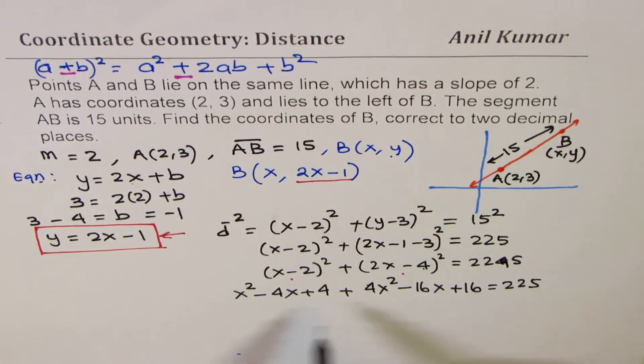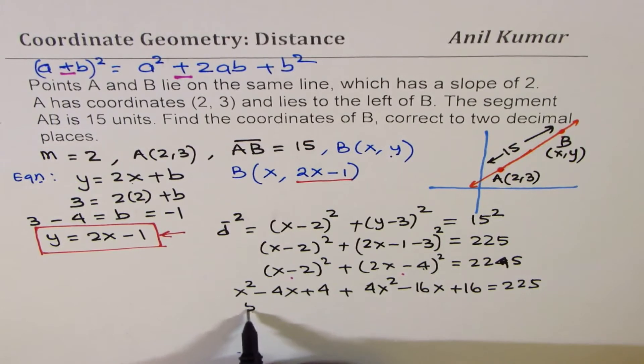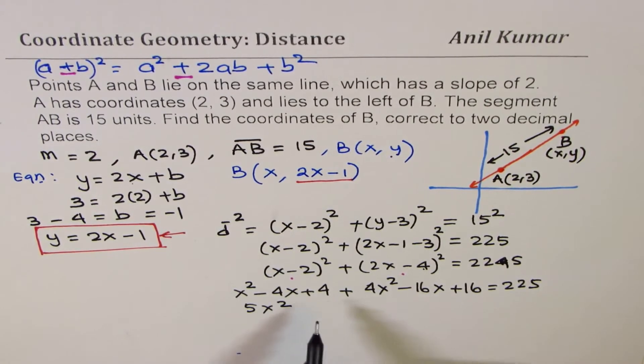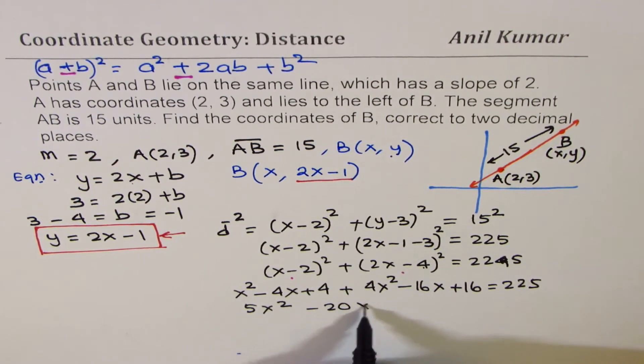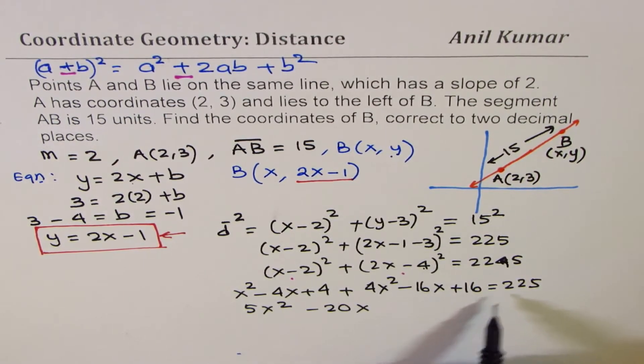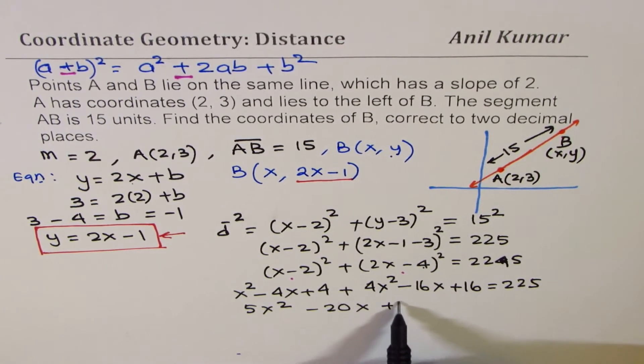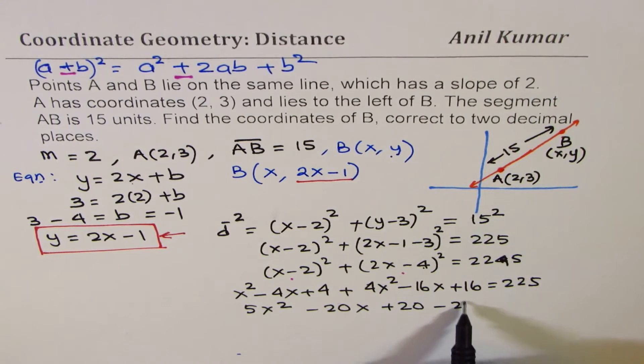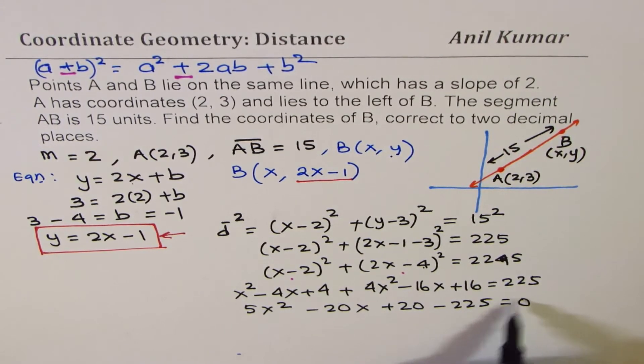Now, we can bring all the terms together, simplify. x² + 4x² is 5x². We have -4x and -16x, which makes it -20x. And as far as numbers are concerned, we have 4 + 16, which is 20. And now, we'll bring it to the left side, which is -225, equals 0.